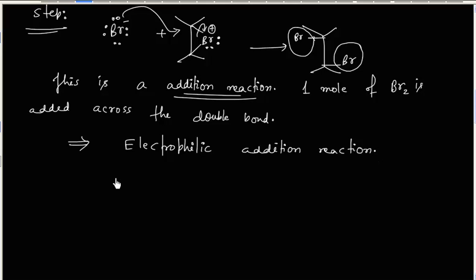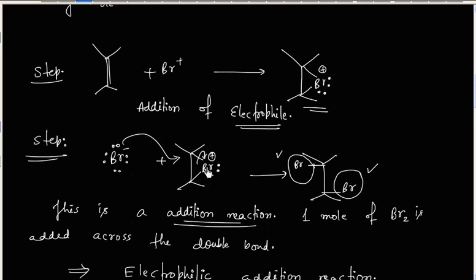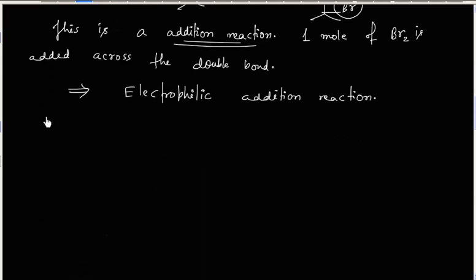One important point: these two bromine atoms are added from opposite sides. Br⁻ is attacking from one side and we have bromine on the other side. This is an example of anti addition — addition of bromine is anti addition.